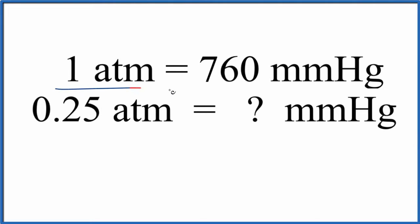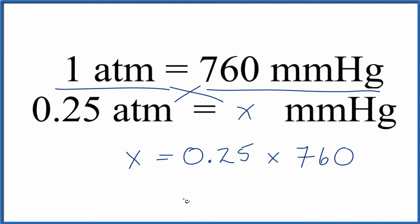The first way, we could just set up a ratio like this and call this here X. Then we could cross multiply. 1 times X, that's X. And then 0.25 times 760. That gives us 190.